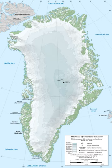The terrain is mostly a flat but gradually sloping icecap that covers all land except for a narrow, mountainous, barren, rocky coast. The lowest elevation is sea level and the highest elevation is the summit of Gunbjörn Fjeld, the highest point in the Arctic at 3,694 metres. The northernmost point of the island of Greenland is Cape Morris Jesup, discovered by Admiral Robert Peary in 1900.